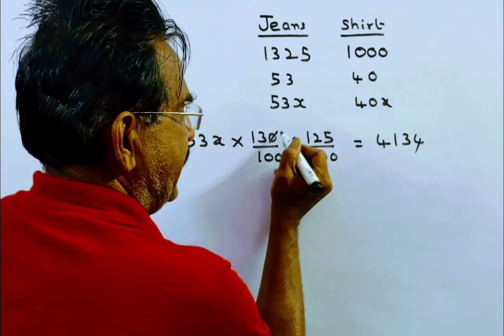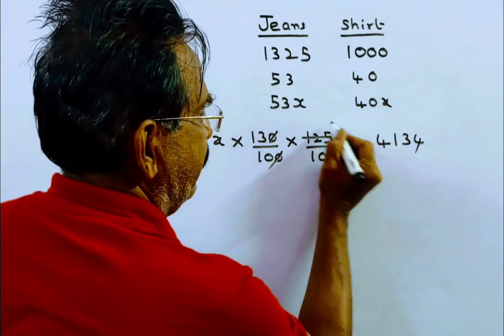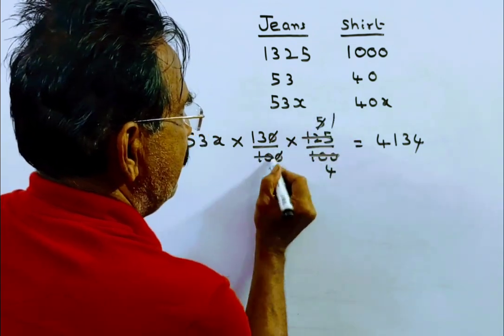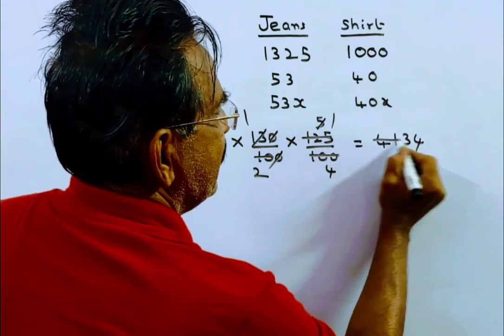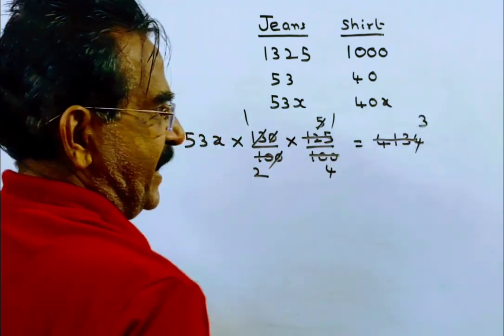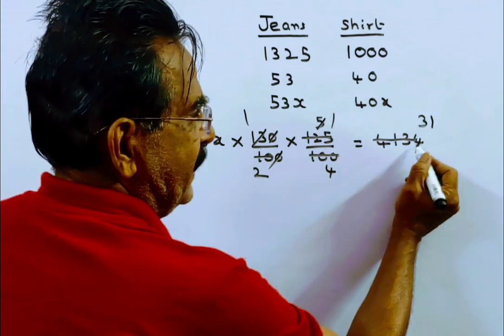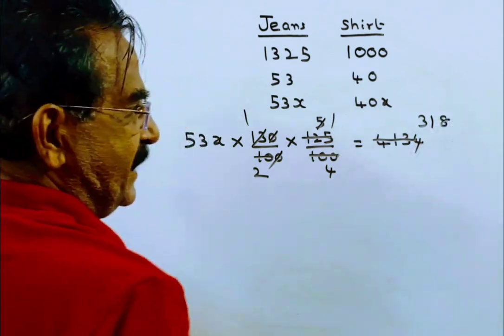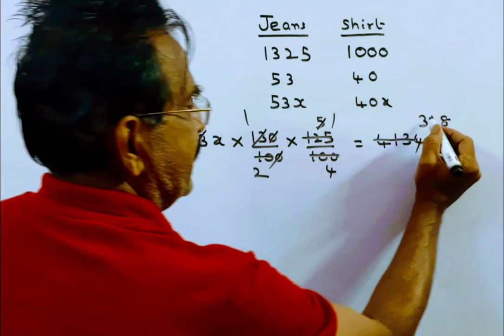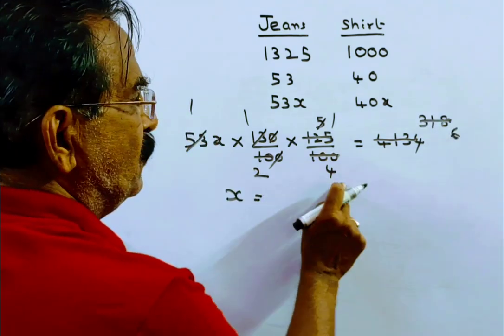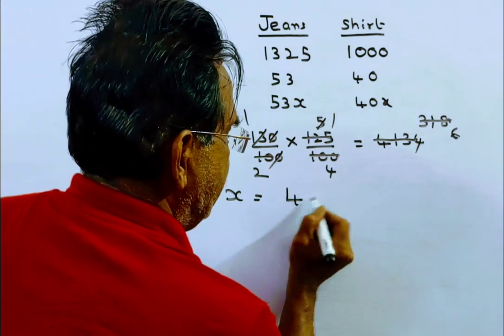Now let us find X. Performing the calculation, dividing 4134 by the factors, we get X equals 48.